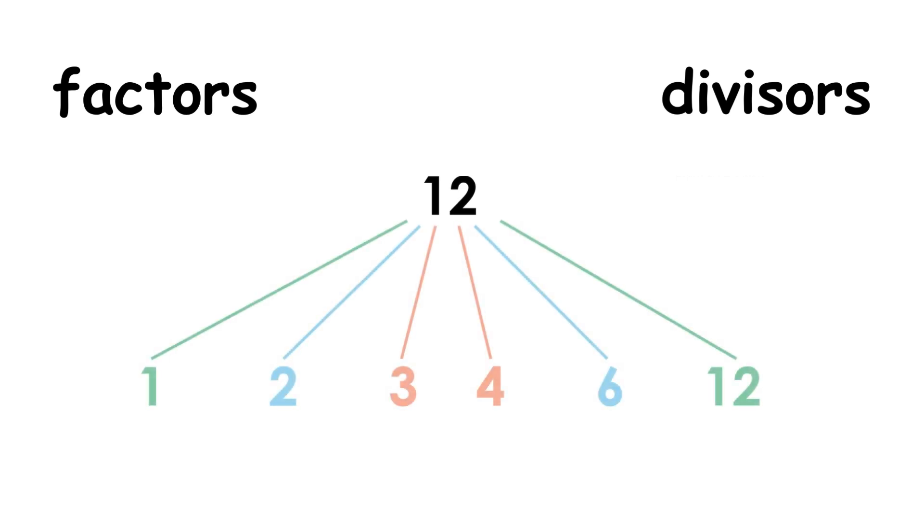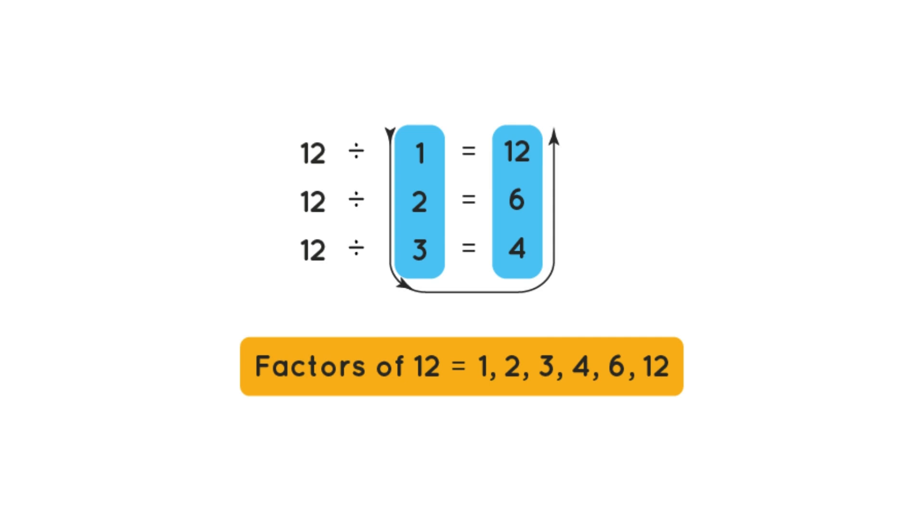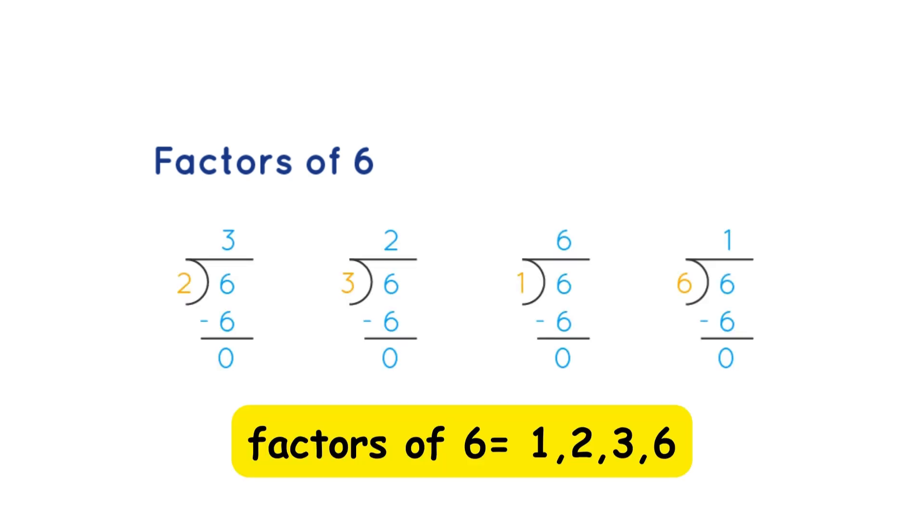Factors. The factors, or divisors, of a number are the numbers that you can evenly divide into the original number. In other words, if you divide a number by a factor of the number, the result will be a whole number. For example, the factors of 6 are 1, 2, 3, and 6 itself.